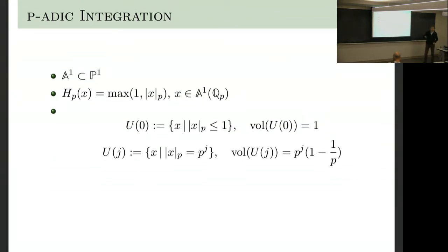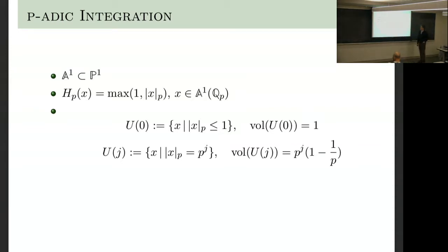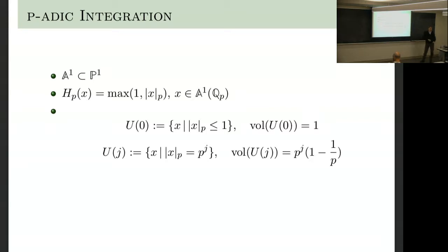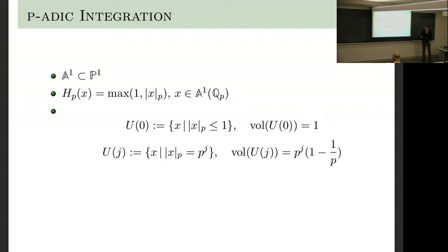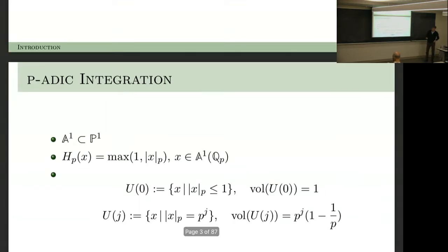We're looking at the p-adic line, looking at the p-adic points. There's a height function, which is the maximum of 1 and the p-adic absolute value of the coordinate. We look at the subsets of the p-adics given by the p-adic absolute value of 1—these are the p-adic integers. We normalize the volume to be 1. Then we look at slices where the p-adic value is p to the j; the volume is this. And then we want to integrate.